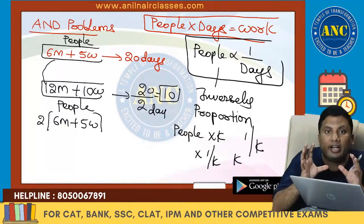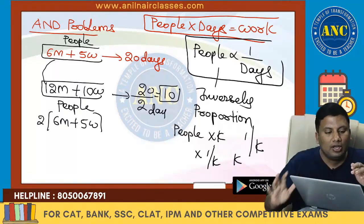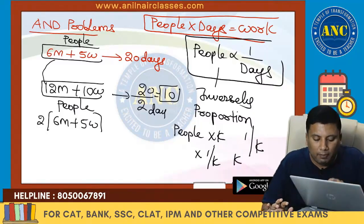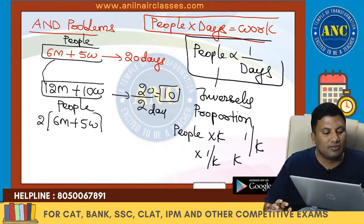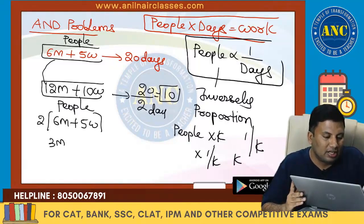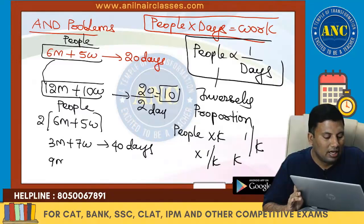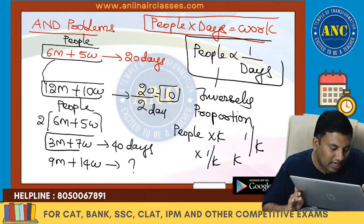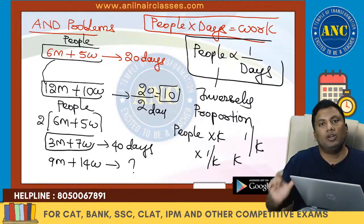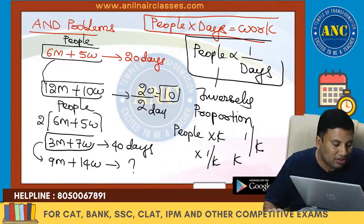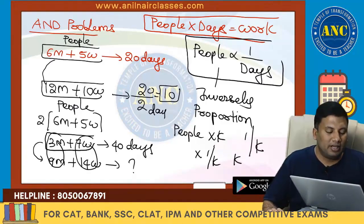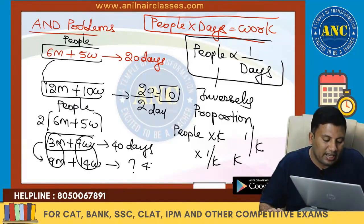Consider the men and women working together as 'people.' If people becomes k times, days will become 1/k times. Suppose it is 3m + 7w taking 40 days, and we ask about 9m + 14w — many students notice men became 3 times, but women did not become 3 times. These are not becoming 3, so please don't take 40 ÷ 3.